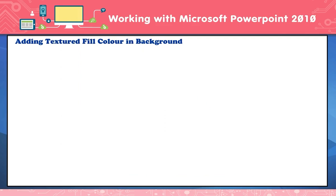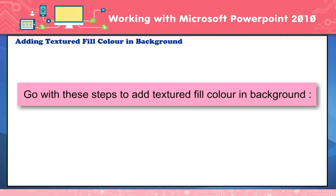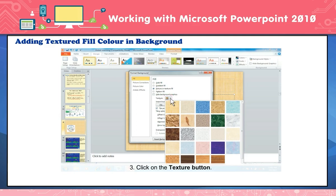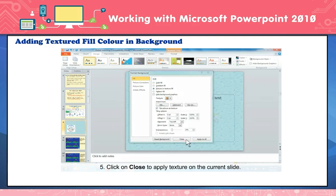Adding textured fill color to the background. To add texture fill color: repeat steps 1 to 3 from the previous section. The Format Background dialog box will appear. Click on Picture or Texture Fill. Click on the Texture button — a drop-down list of textures will appear. Click on the texture you want to apply as a background. Click Close to apply the texture to the current slide, or click Apply to All to apply to all slides. The new texture is now applied to the presentation.